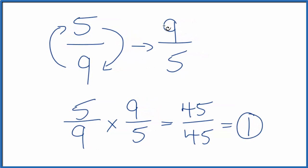So we did this top part correctly. The reciprocal for five ninths is nine fifths.